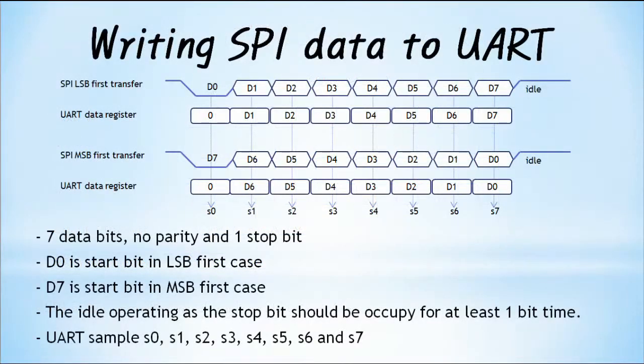Let's look at the case where the SPI transfers data to the UART device. The SPI supports 8 data bits. In case of 8-bit SPI, 8 data bits are transmitted with start bit, 7 data bits, and a delay bit used as stop bit. Because the UART has LSB first communication, if the SPI supports LSB first, set the SPI to LSB first. When LSB first communication is performed, one bit shift left for LSB — bit 0 — to use as start bit.